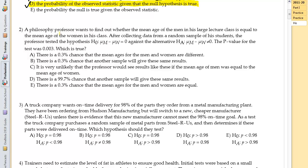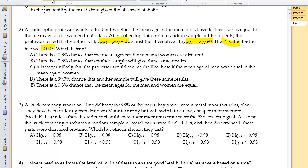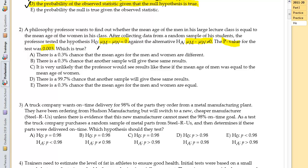Let's go ahead and move to number two. A philosophy professor wants to find out whether the mean age of men in his large lecture class is equal to the mean age of women in his class. After collecting data from a random sample of his students, the professor tested the hypothesis that mu of m minus mu of w is equal to zero and the alternative hypothesis that is not equal to zero. The p-value for the test was 0.003. So this is a pretty small p-value, right? So the idea here is that if alpha is greater than your p-value, then we reject the null hypothesis.